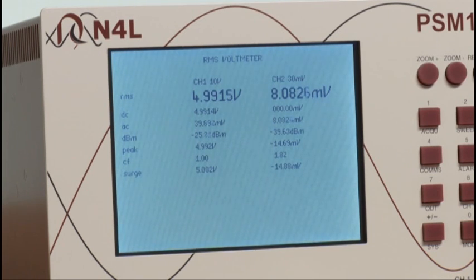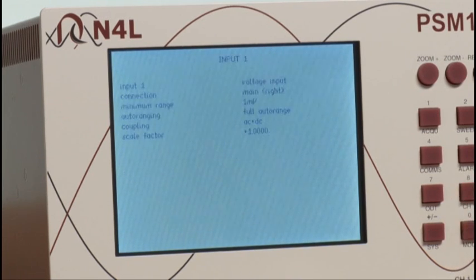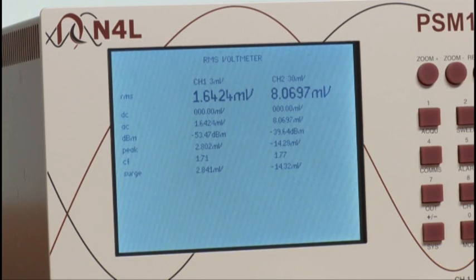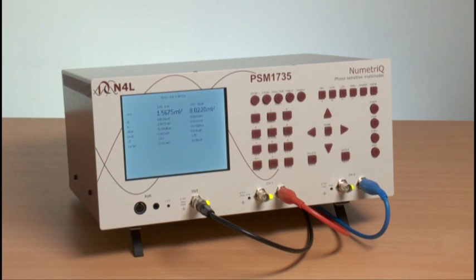We are going to set the AC coupling mode for channel 1 by going into the channel 1 menu, because for frequency response analysis we are interested in only the AC component. Now you see 1.6 millivolts on channel 1 and 8 millivolts on channel 2. Channel 1 is the input and channel 2 is the return, so there is gain.